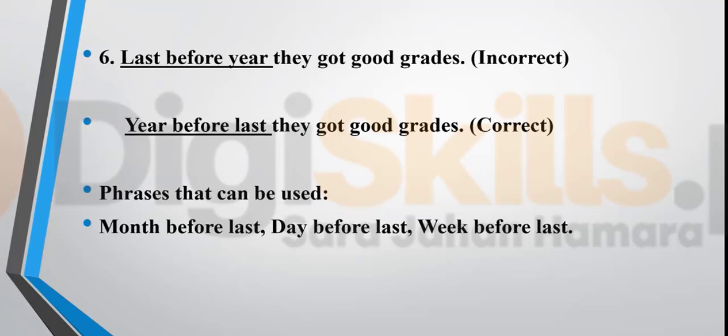'Last before year they got good grades' — this is incorrect. When referring to the period before last year, last month, last week, or yesterday, the correct expressions are 'year before last,' 'month before last,' 'week before last,' or 'day before last.' For example: 'Year before last they got good grades,' 'The day before last I was extremely occupied with my assignments,' 'Month before last I went to America to meet my relatives.'